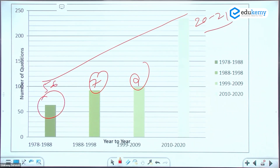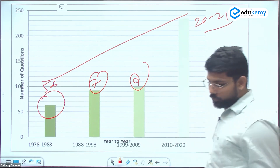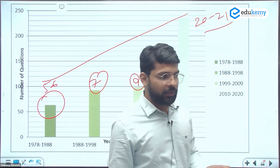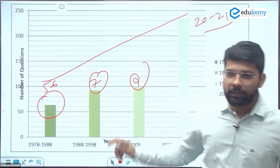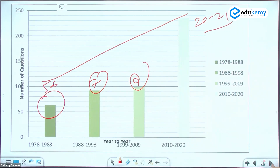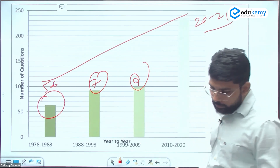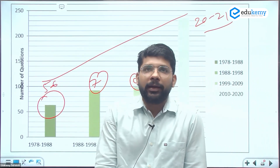Economy's weightage is on an increasing trend while history's weightage is decreasing. Candidates must consider return on investment — do you spend two months on ancient history or two months on economy? Given economy now yields around 20 questions, it is strategically valuable to prioritize it based on the exam's current pattern.